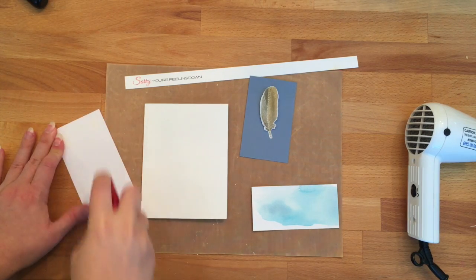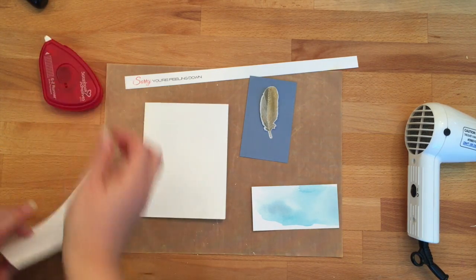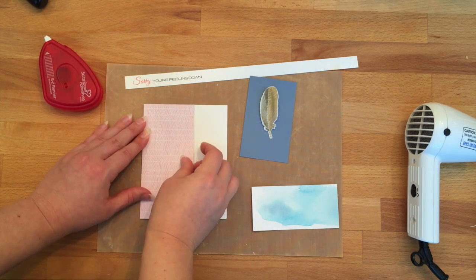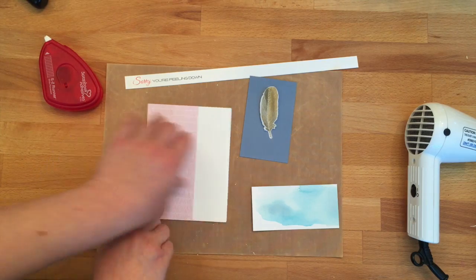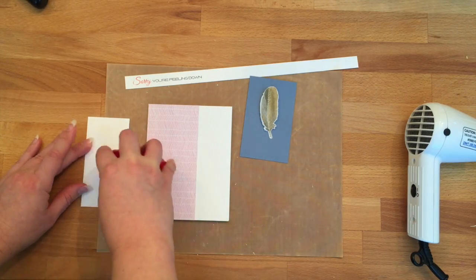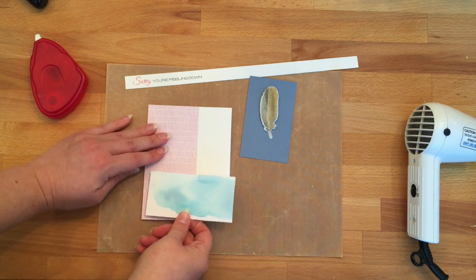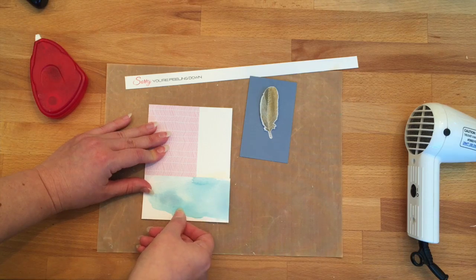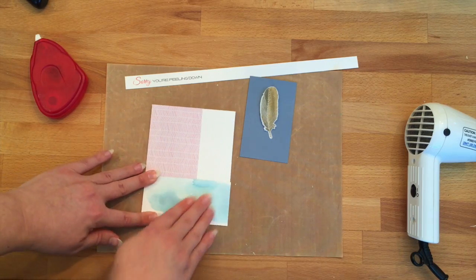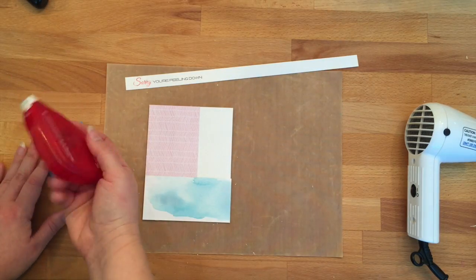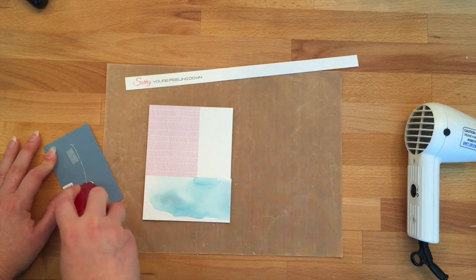And it's time for assembly. The patterned paper we're using is from the Studio Calico Brighton Pier paper pad—that's that pink paper. I cut it to size to fit the front of the card. Then we have our watercolor piece that I've also cut to size so it fits the front of a card. And then we're going to take our little die cut piece, and that's going to go front and center onto the card.